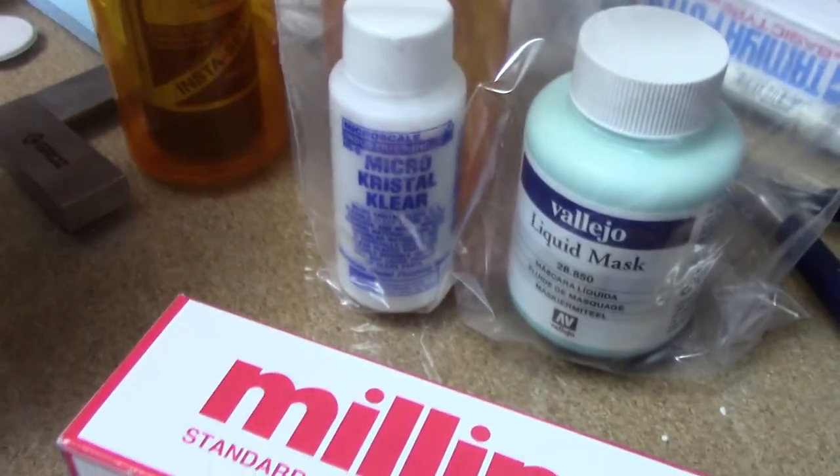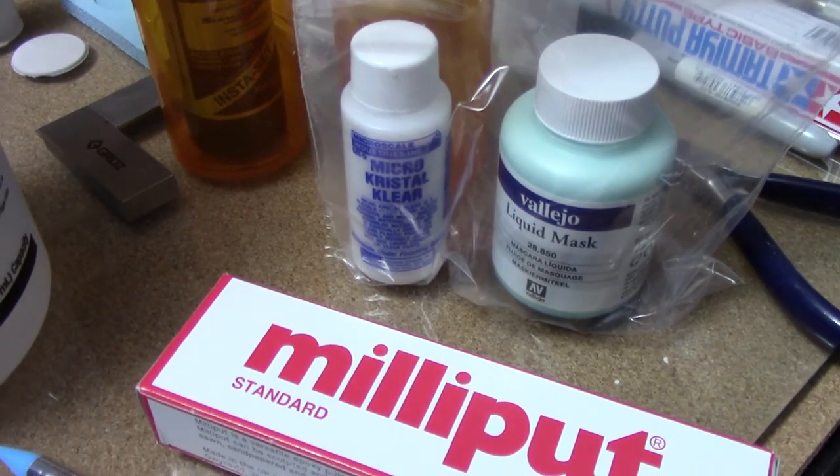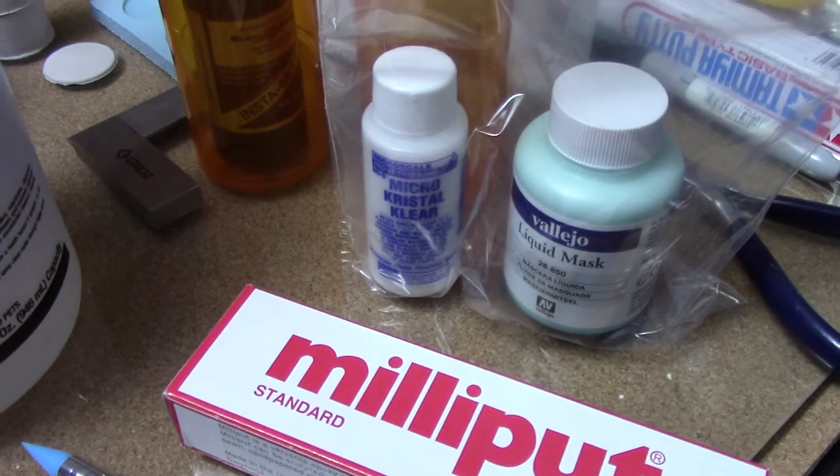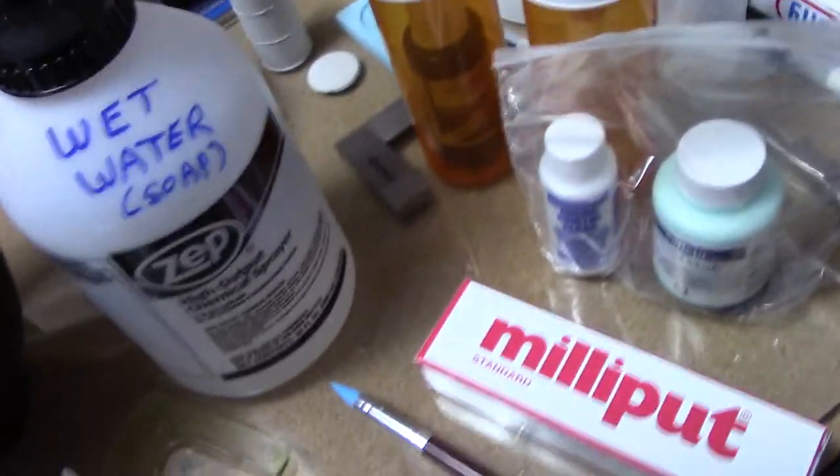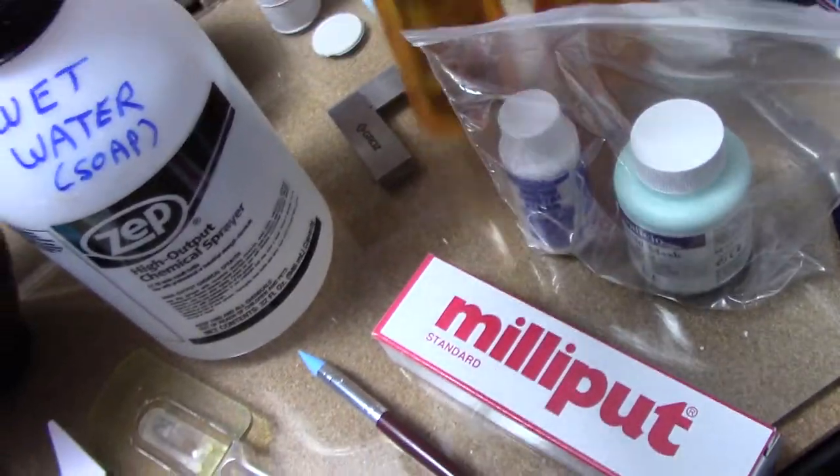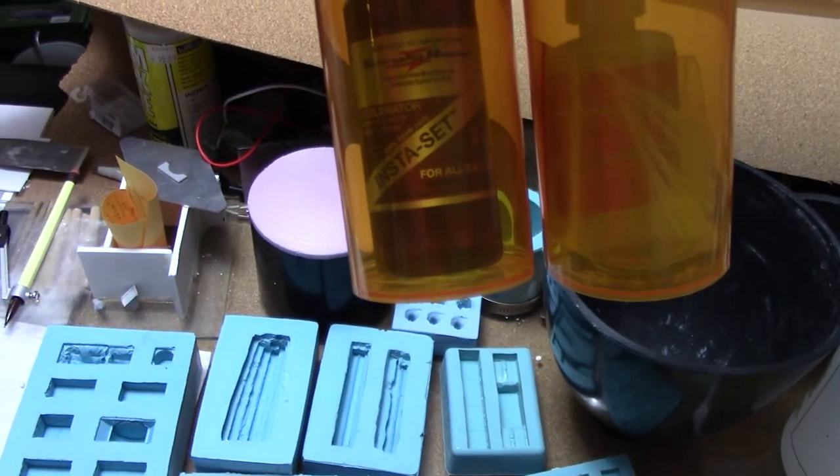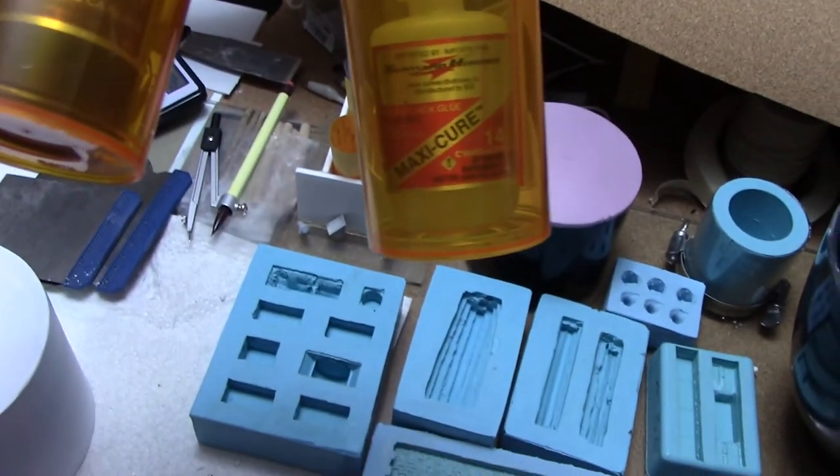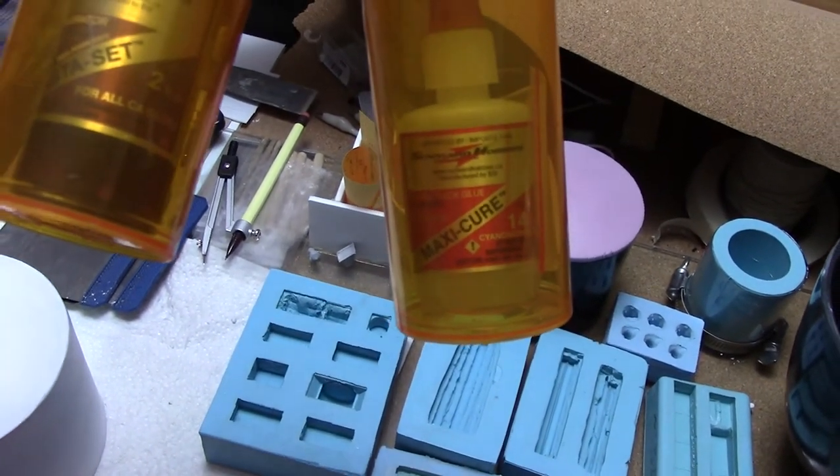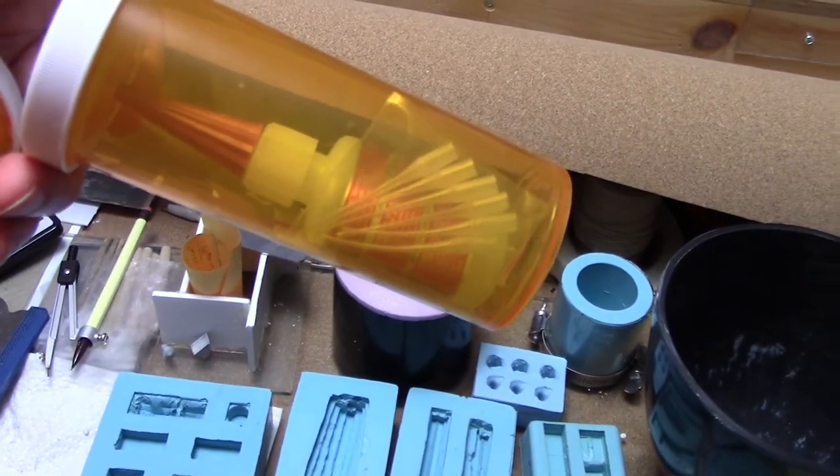Heard very good things about using that product for creating window panes rather than using the acetate film. Something else I picked up was some Insta-Set for accelerator for the cyano acrylate. And I picked up some Maxi Cure cyano acrylate as well as some of the fine tips to use with that.